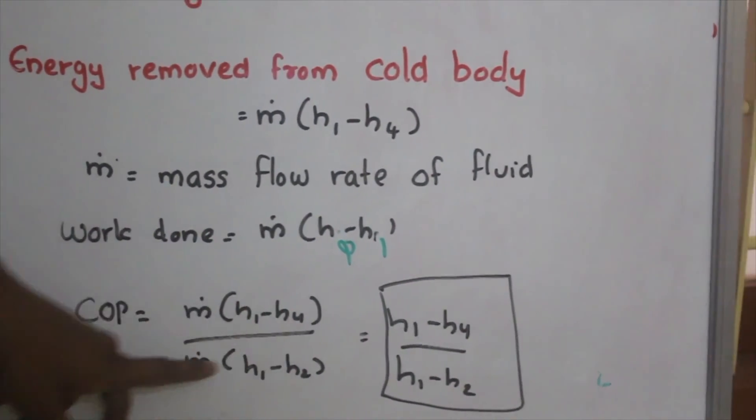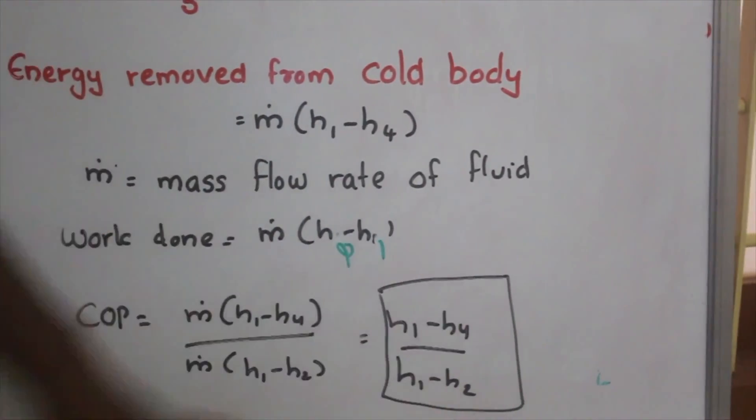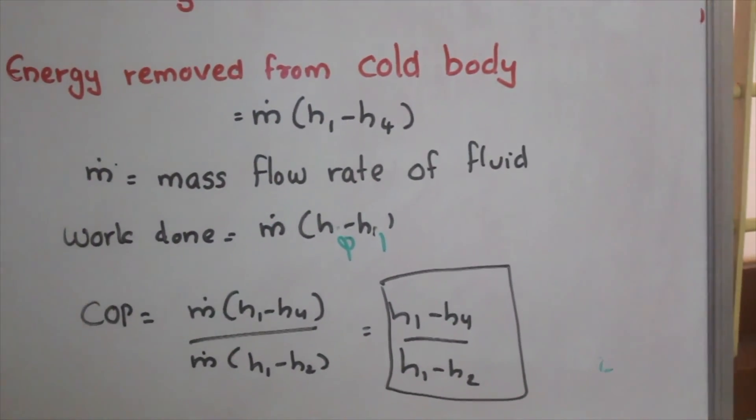That is m dot (h1 minus h4) divided by m dot (h1 minus h2). So we get (h1 minus h4) divided by (h1 minus h2).